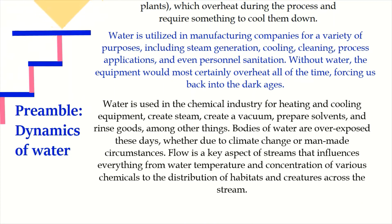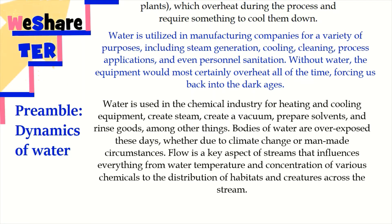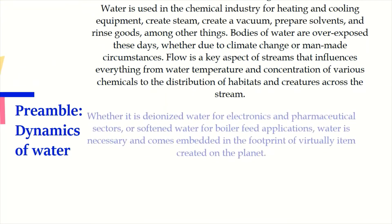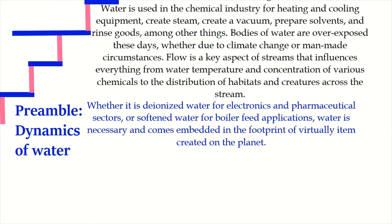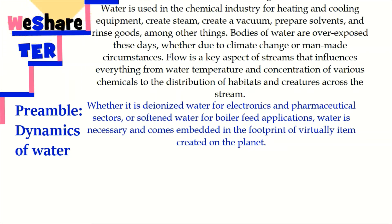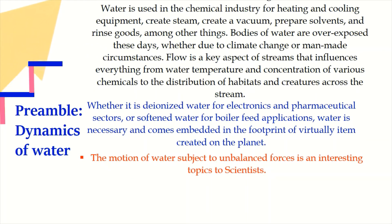Water is used in the chemical industry for heating and cooling equipment, creating steam, creating a vacuum, preparing solvents, and rinsing goods among other things. Bodies of water are overexposed these days, whether due to climate change or man-made circumstances. Flow is a key aspect of streams that influences water temperature, concentration of various chemicals, and distribution of habitats. Whether it is deionized water for electronics and pharmaceutical sectors or softened water for boiler feed applications, water is necessary. The motion of water subject to unbalanced forces is an interesting topic to scientists.